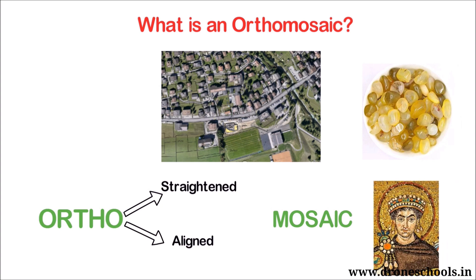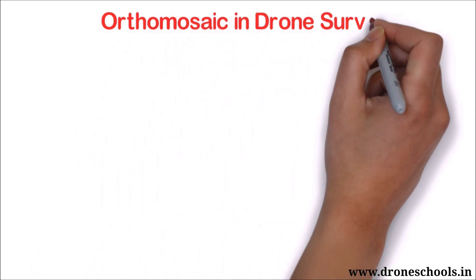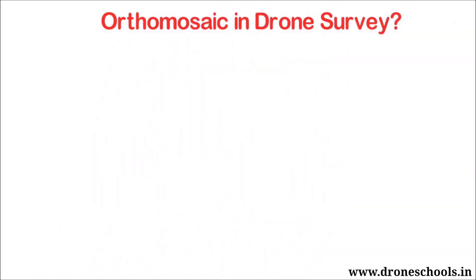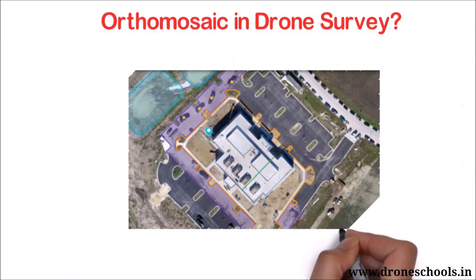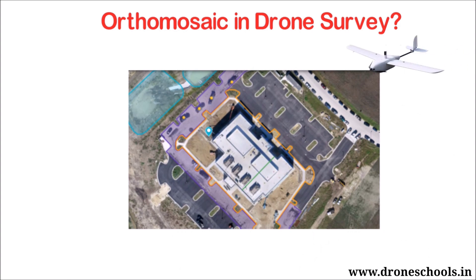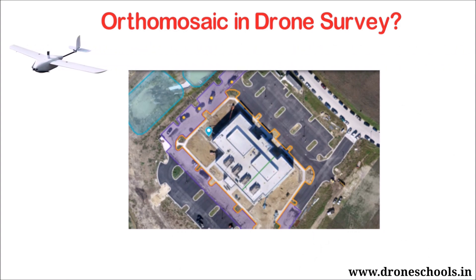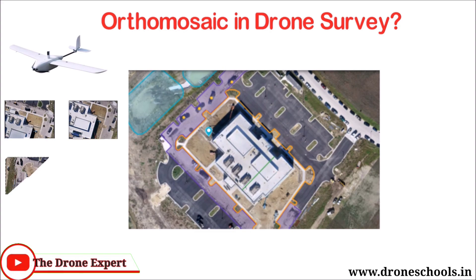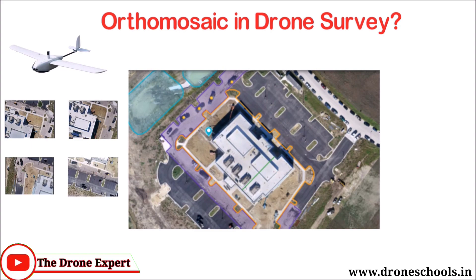In drone survey, a drone Orthomosaic map is composed of many individual still images captured by the drone that are stitched together in software to create a large, high-resolution image — this is called an Orthomosaic.